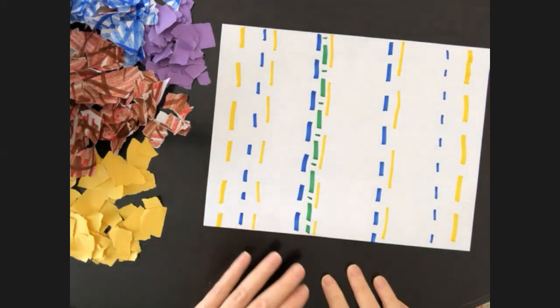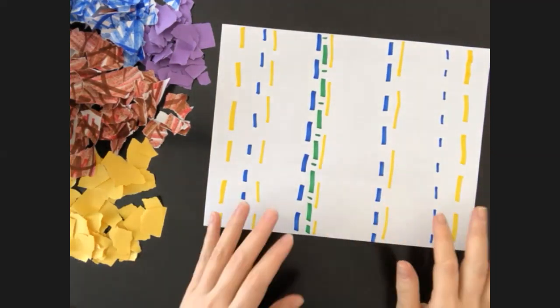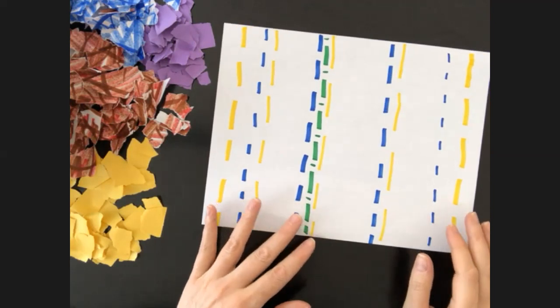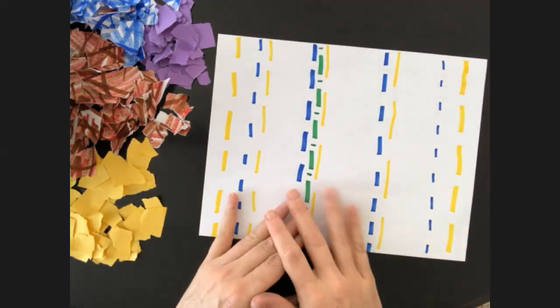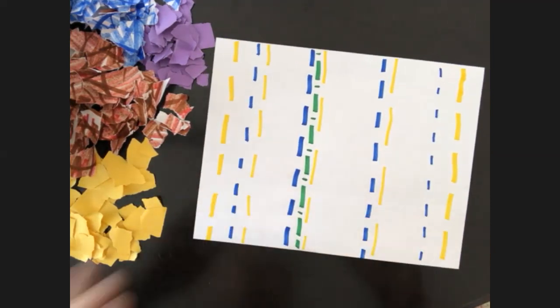All right third grade, let's do our Alma Thomas project. I'm going to use paper for this design, and as you can see my background paper is white. I started ahead of you because I wanted to be able to show you this whole project without taking too much time.